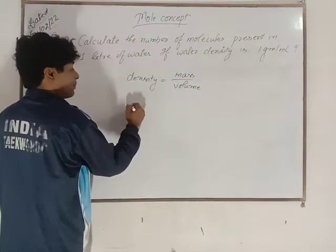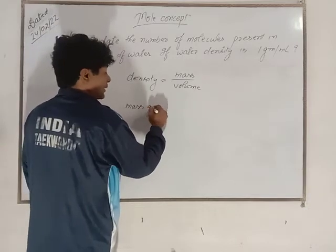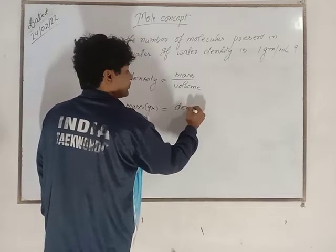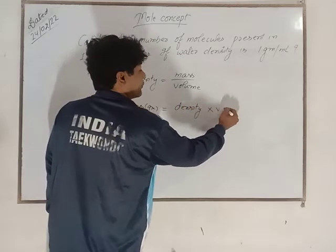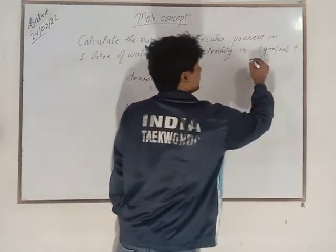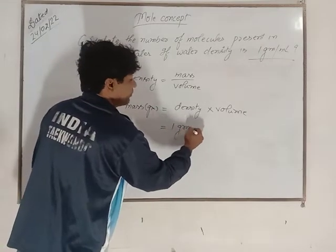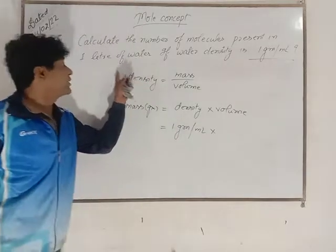Then, you have to calculate mass in grams. This will be equal to density into volume. Here, density is given. Density is 1 gram per ml into volume. Volume is taken as 1 liter.